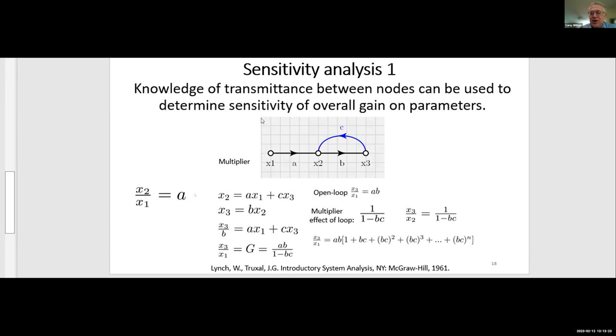So looking at this, if we had knowledge of the transmittance between the different nodes in the differential equation, that could be used to determine the sensitivity of the overall gain on the parameters. So here just worked out the transmittance or transfer function between nodes. It's obvious in the case of from X2 to X1. And then in the second case where we're going from the first node to the final node, the full system transmittance, if we write the equation separately for X2 and X3 and combine them, we end up with this kind of a familiar expression in feedback.